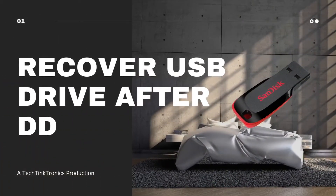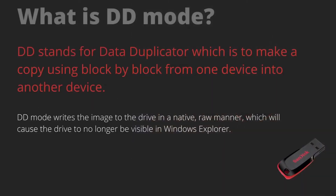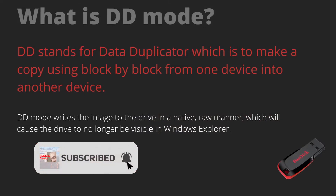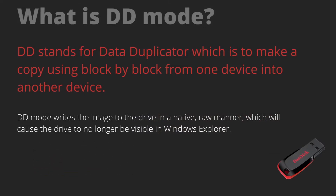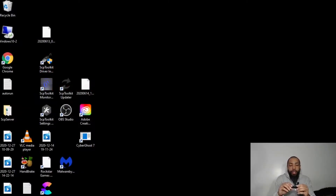What we're going to be talking about is recovering a USB drive after DD mode. DD stands for Data Duplicator, which makes a copy using block-by-block from one device into another. DD mode writes the image to the drive in a native raw manner, which will cause the drive to no longer be visible in Windows Explorer.